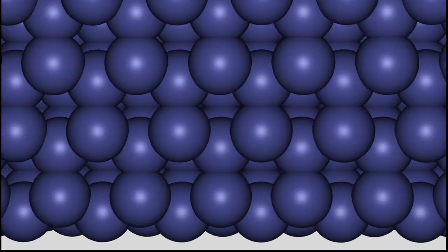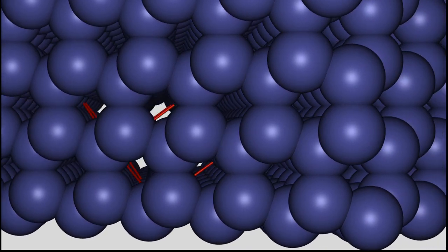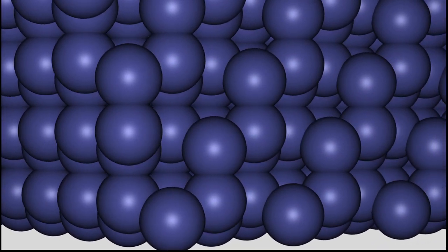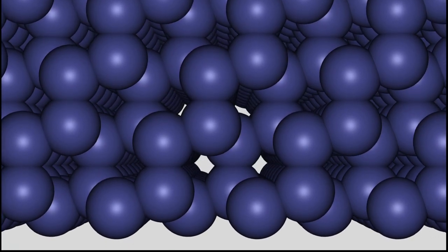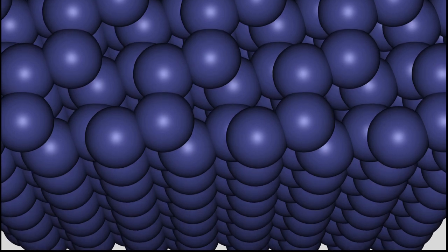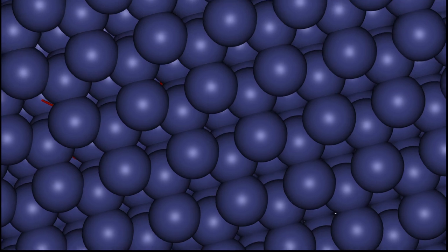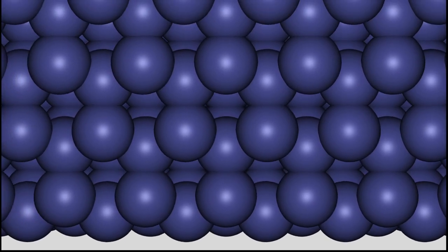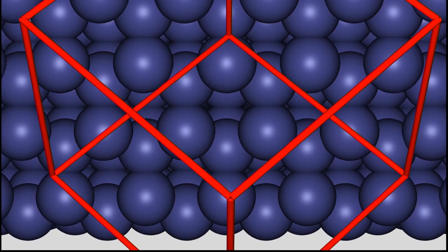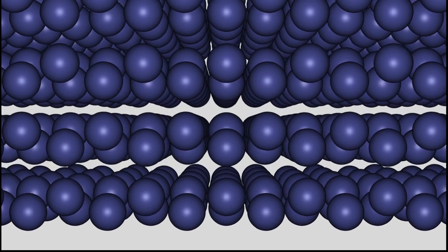Let's remove the sticks and enlarge the atoms according to the Calotte model. By now only some viewing angles allow an insight to the crystal lattice.